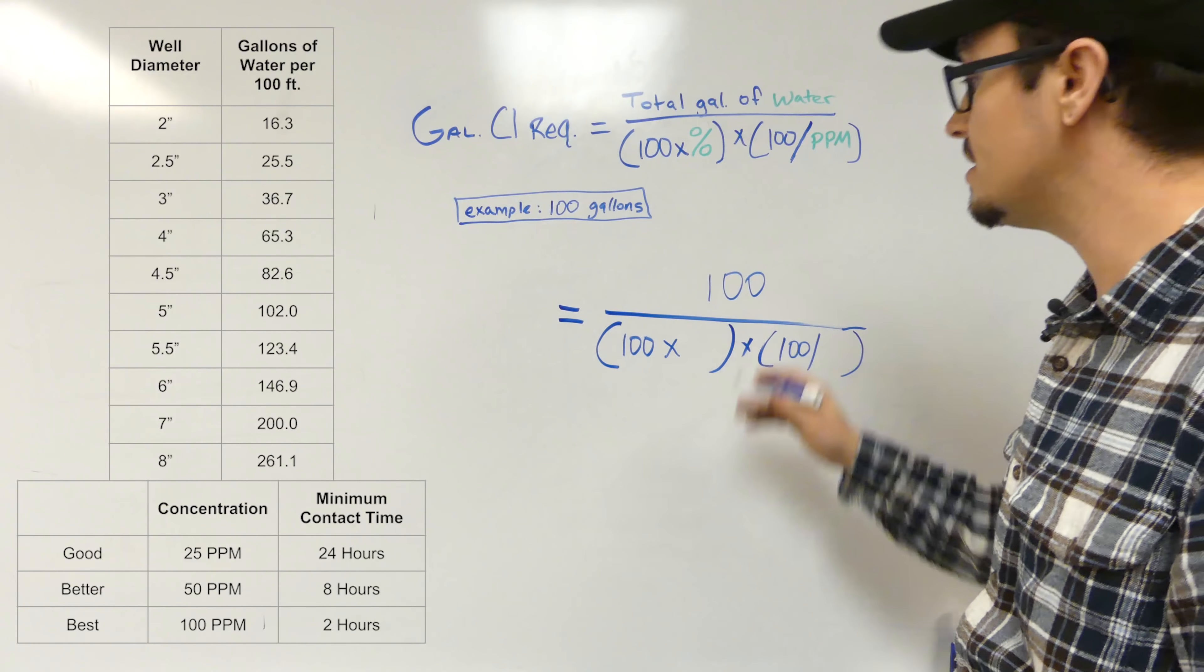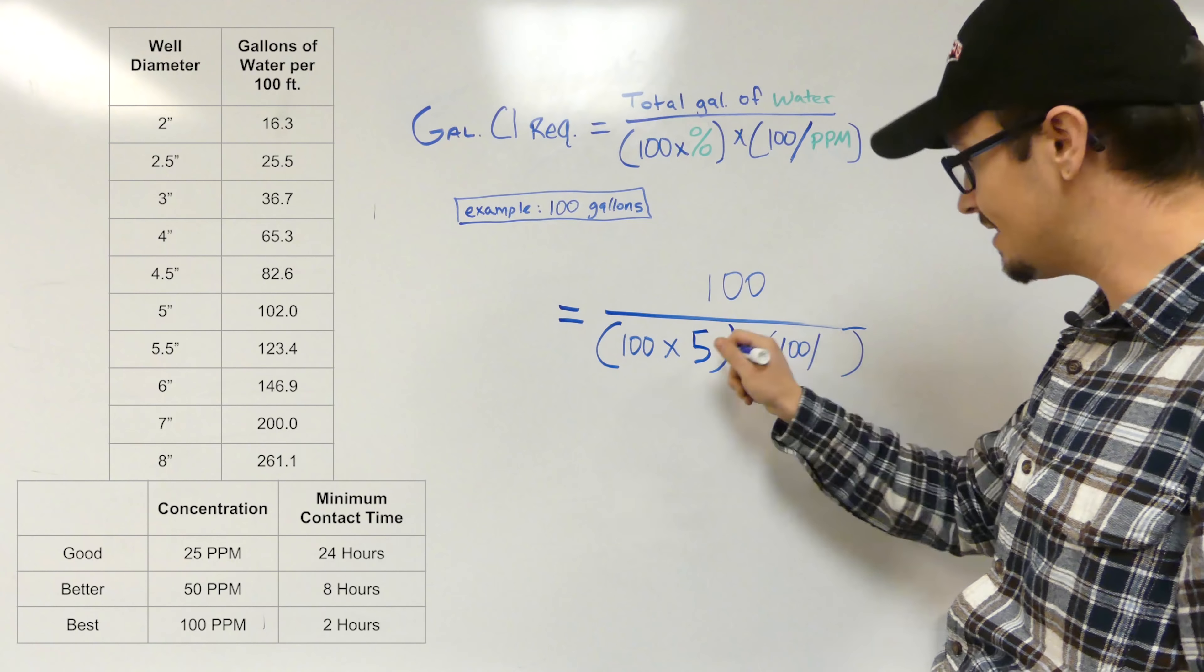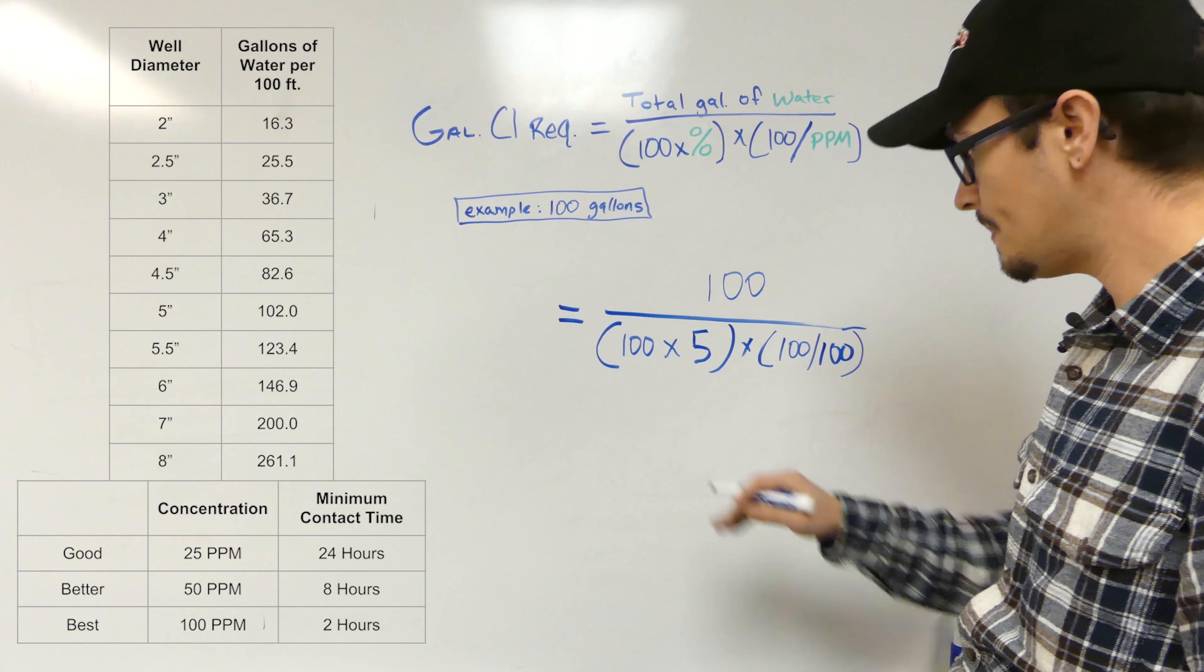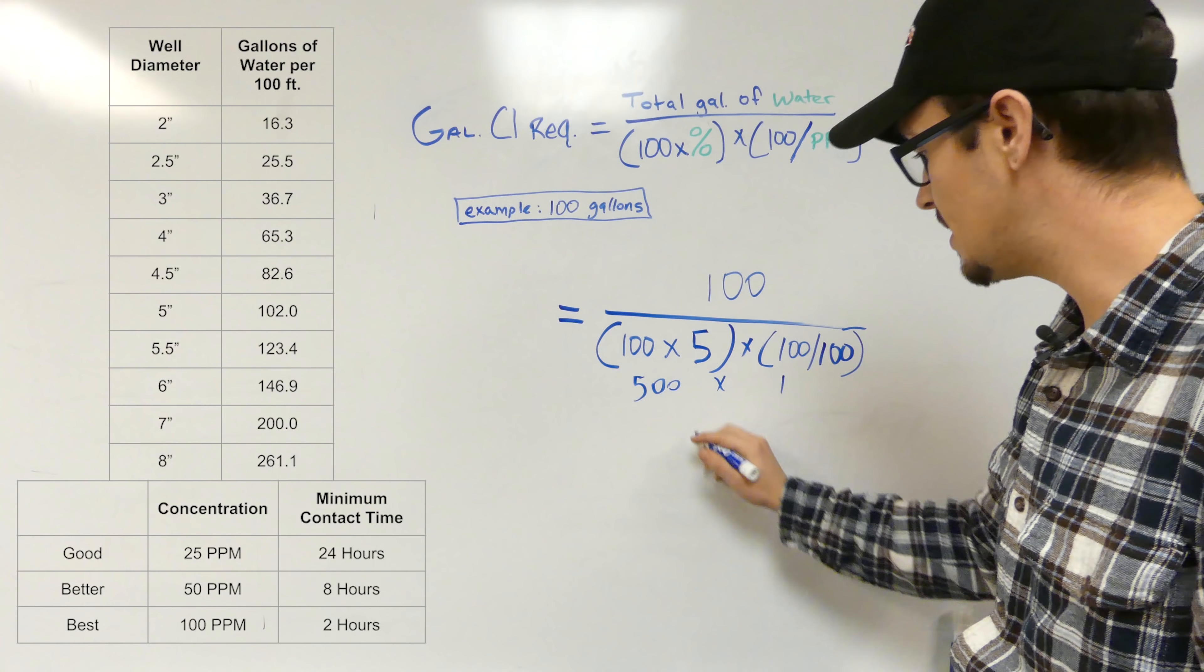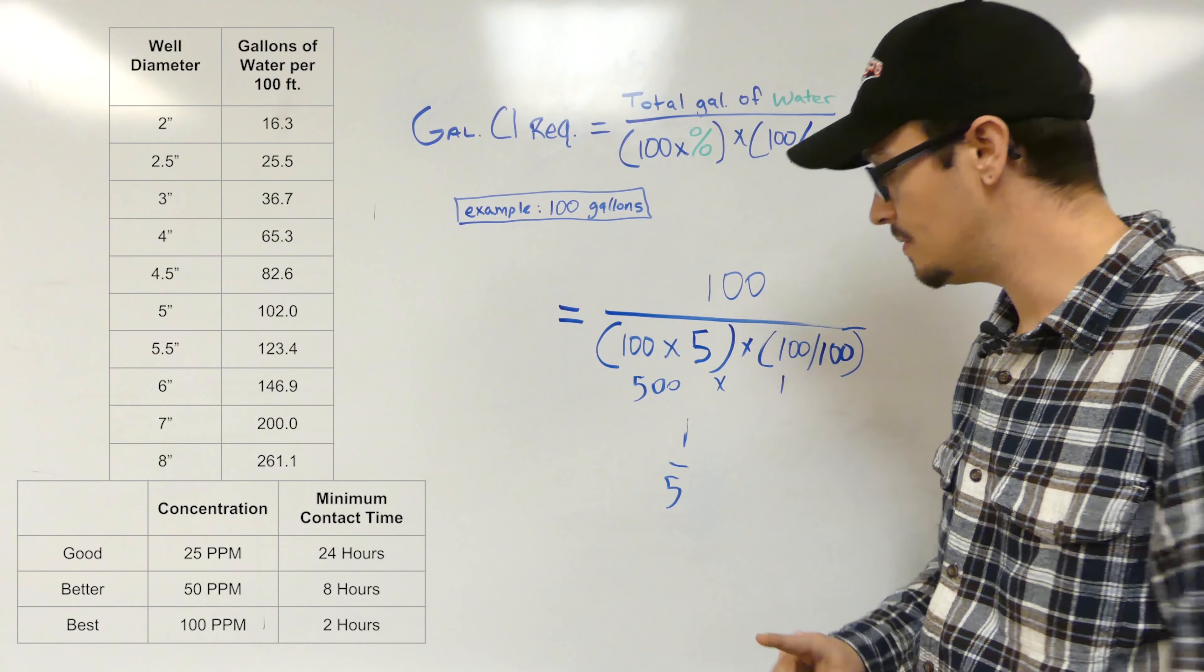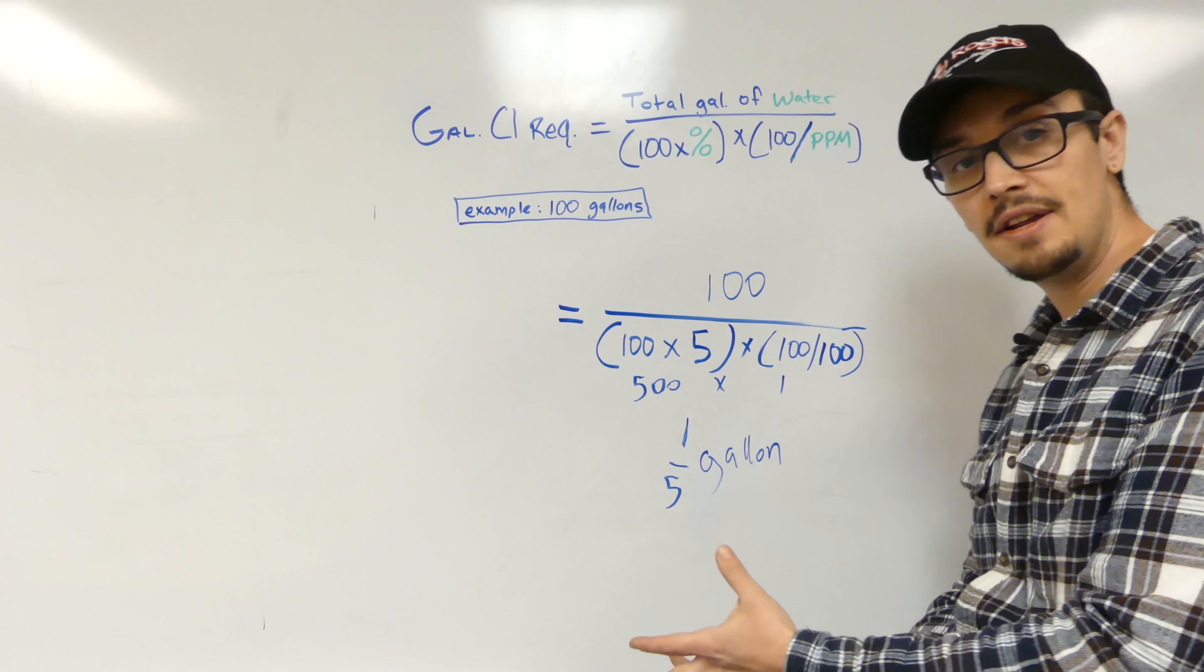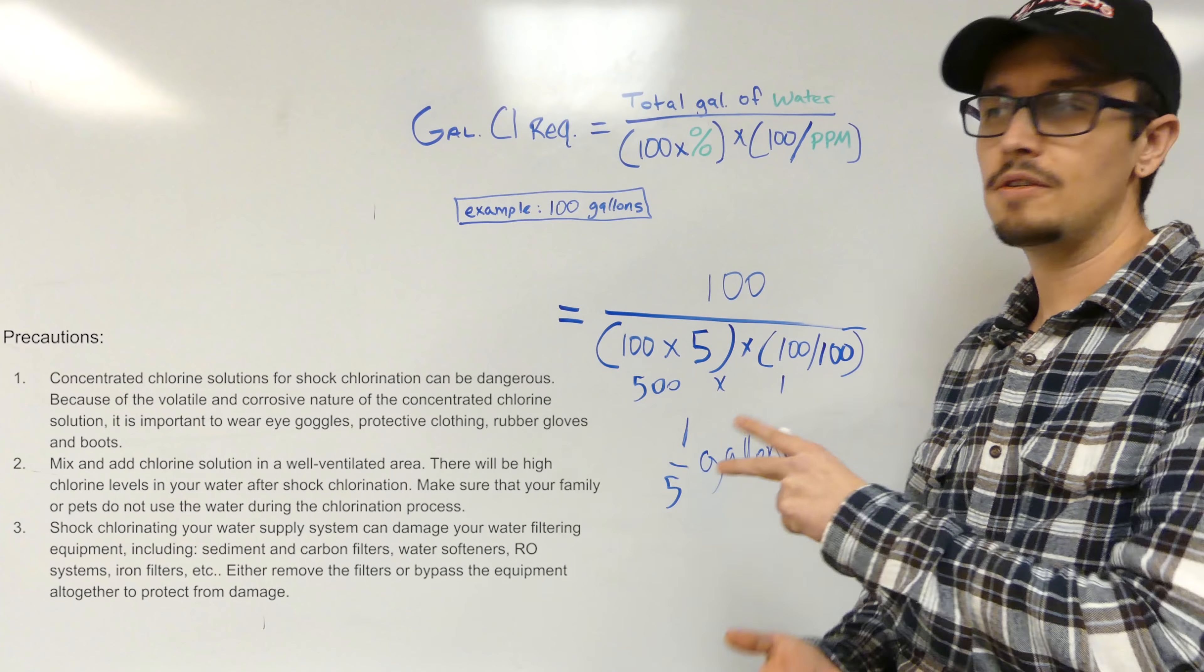We've got total gallons of water. We're going to put 100 up here. That's how many gallons of water we're trying to treat. Then we need to do our percentage. We're just going to use off the shelf store-bought bleach that is 5%. Just remember, 5% is 5 in this particular spot. I mentioned 100 parts per million is usually what you want to shoot for for a lower retention time as well as a higher effectiveness because of the concentration. So we're going to do 100 here. Let's boil this down. We got 500 times 1. Basically we've got 100 over 500, which we can reduce down to one-fifth of a gallon of 5% store-bought bleach to super chlorinate at 100 parts per million. A really shorthand way of calculating that. Hopefully this helps you determine exactly how much chlorine to put in.